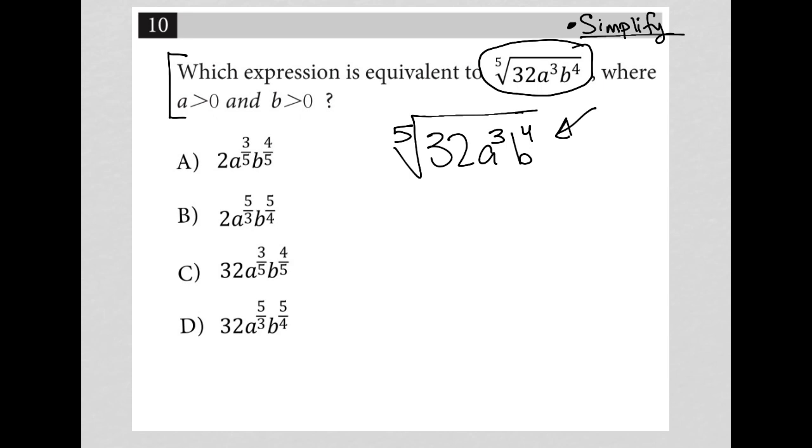So let's see if this is helpful for you. So this turns into 32 to the one fifth power a to the three fifths power and b to the four fifths power.